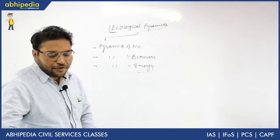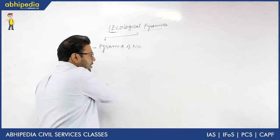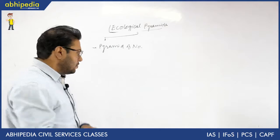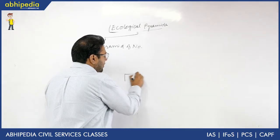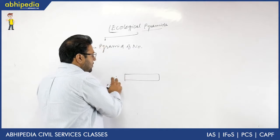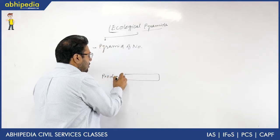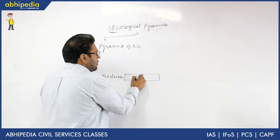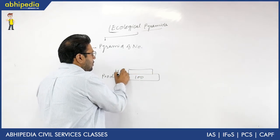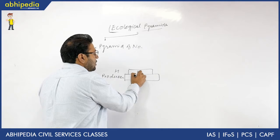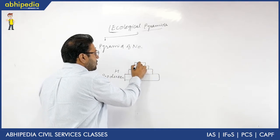The first is the Pyramid of Number. For example, we can say the number of producers is 100, the number of herbivore consumers is 80, the number of carnivores is 60, and the top carnivore is 20.